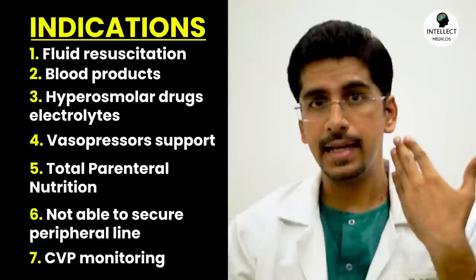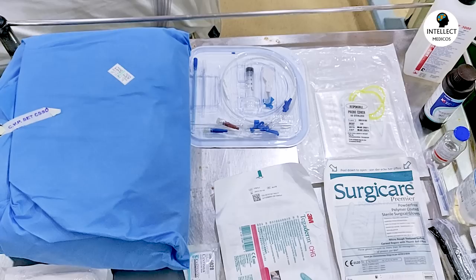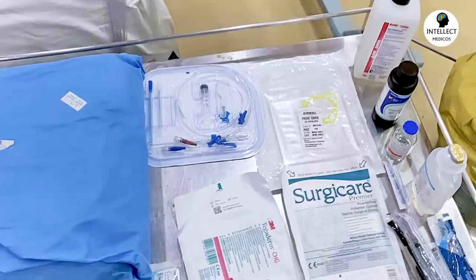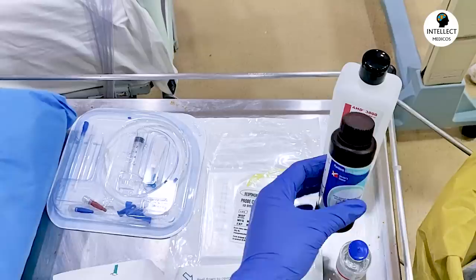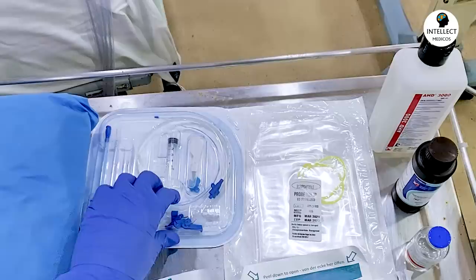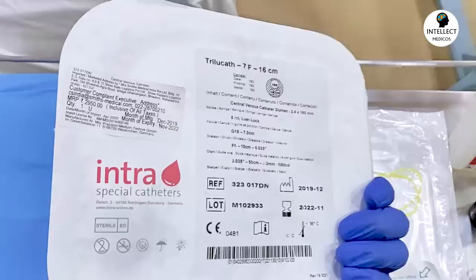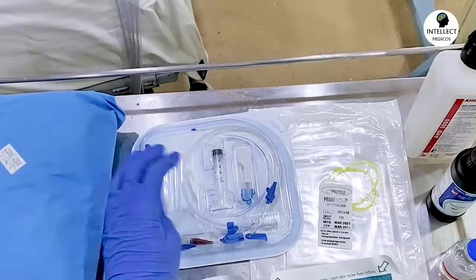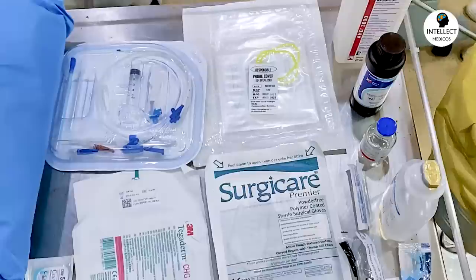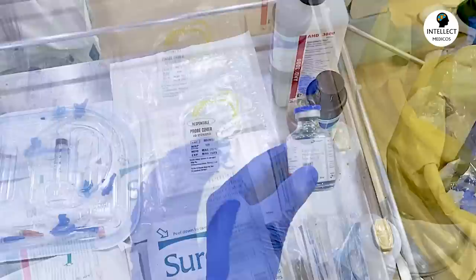Coming to the second part — the equipment required for central venous catheterization. This is our CVP set, having a gown and sterile things. This is our betadine solution, a skin disinfectant ASD3000, and a central line kit having a triple lumen central line — 7 French, 16 centimeters. Then this is our sonocyte probe cover. A pair of gloves, dressing, local anesthetic agent which is lignocaine, and some syringes and needles.